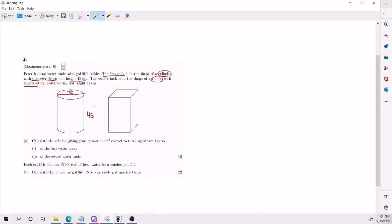With length 40, which will be this guy here. Width 32, which is this guy here. And height 42, which is this guy here. That's what the problem gives us. We need to calculate the volume, giving your answer in centimeters cubed, correct to three significant figures for part A of the first water tank and the second water tank.